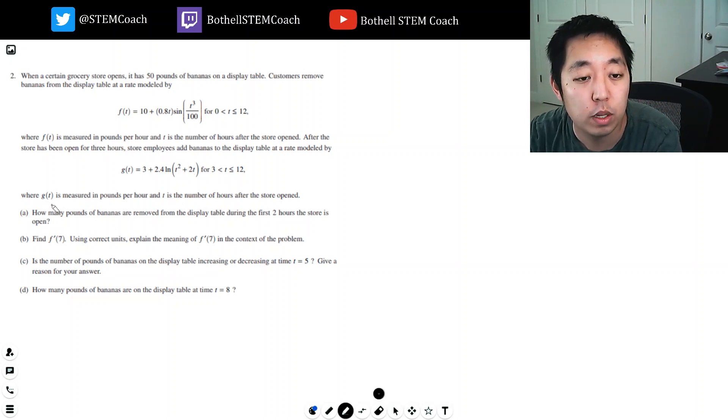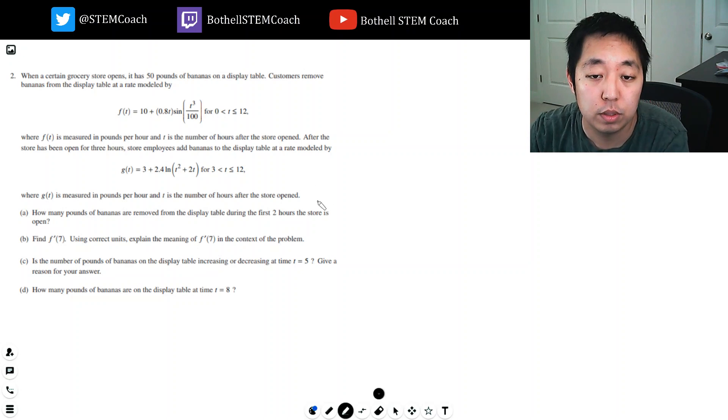Part A: How many pounds of bananas are removed from the display during the first two hours? This is pretty easy. If this is the rate at which we're removing them, then the total would be the area under the curve. We don't care about the replacing because they're just asking how many are removed.